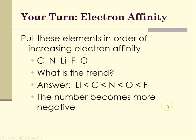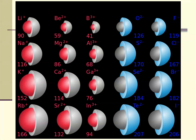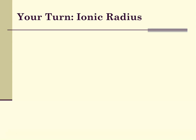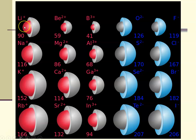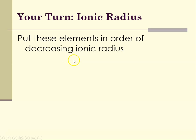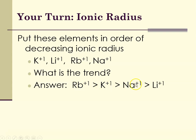The electron affinity number becomes more negative as we move from left to right across a period. Now for the radii — we're asked to rank elements in order of decreasing atomic radius. For positive ions, the radius is always smaller than the neutral atom, but from top to bottom it is increasing. So put these elements — all plus-one group one metals — in order of decreasing ionic radius. The trend is radius increases from top to bottom, so decreasing starts with rubidium at the bottom as the largest, then potassium, then sodium, then lithium.